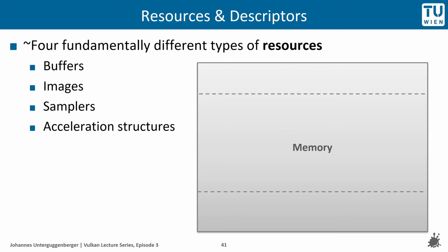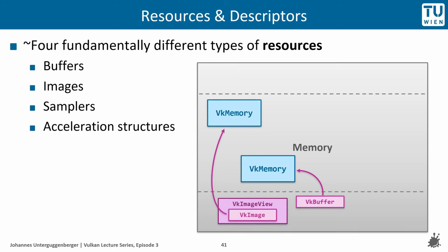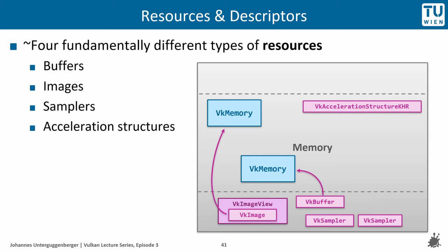We have now seen how to create different resources in GPU memory, where some require separate VkMemory allocations — typically those which can become rather large, such as buffers and images. Images almost always require a view, whereas it is typically not required for buffers unless format conversions are desired. Smaller resources like samplers and inline uniform blocks do not require separate memory allocations. Acceleration structures can become pretty large in memory: the VkAccelerationStructureKHR itself contains only metadata with low memory requirements, while the geometry data requires a separate buffer to be provided and referenced, for which the programmer can decide the memory region.